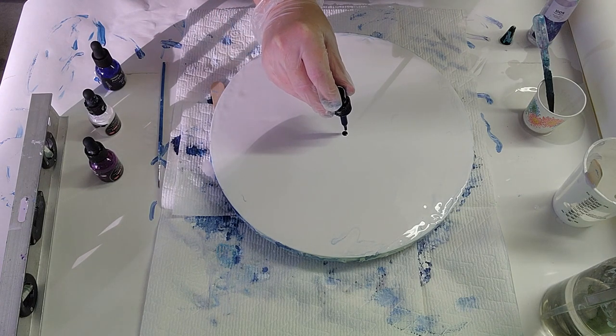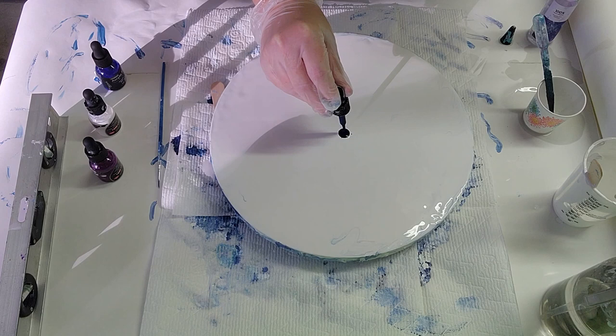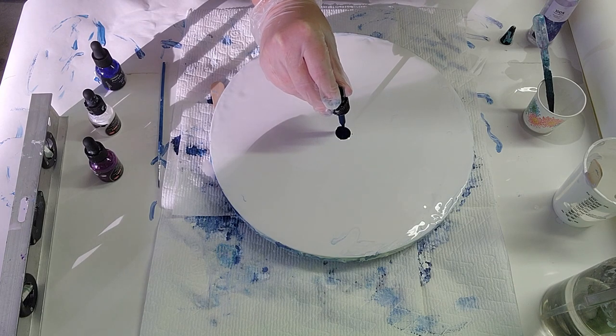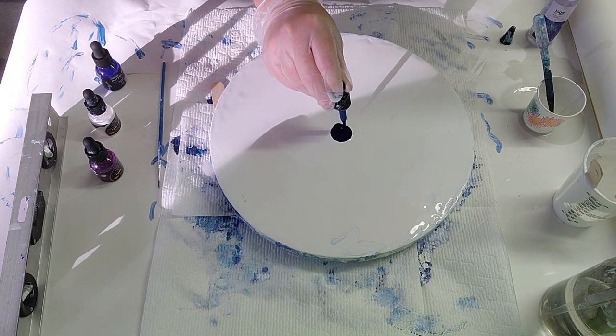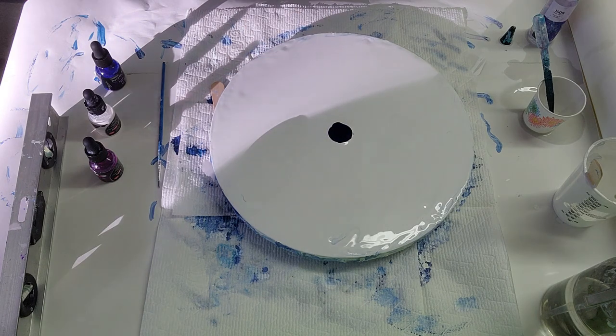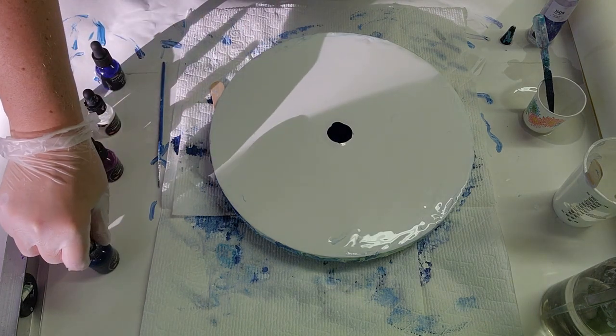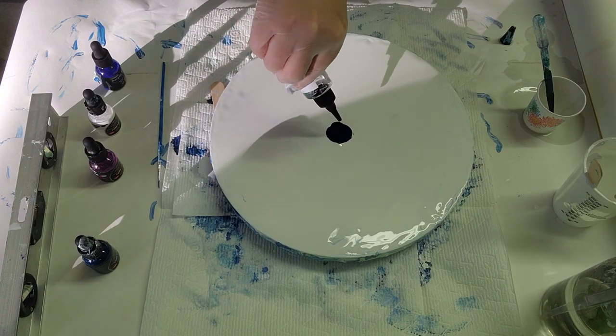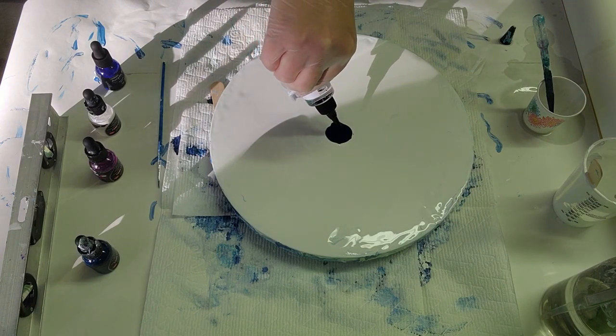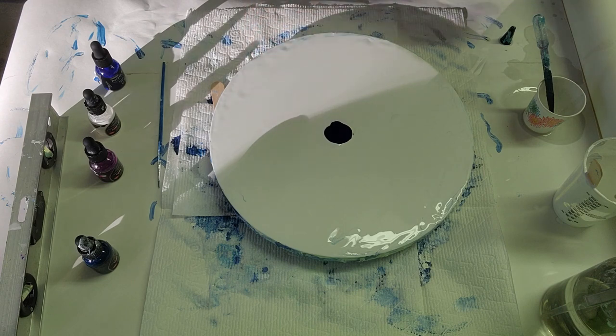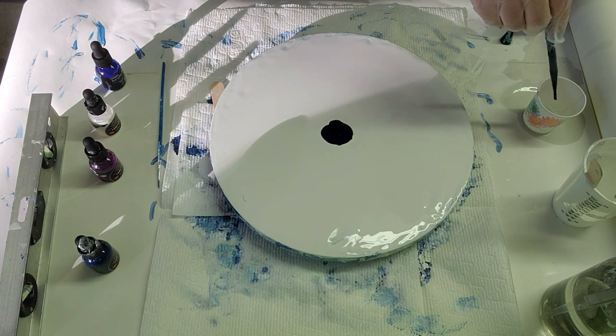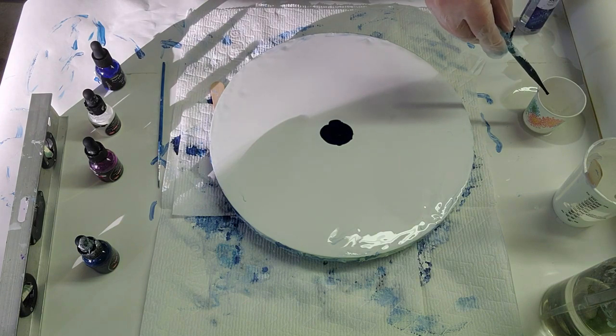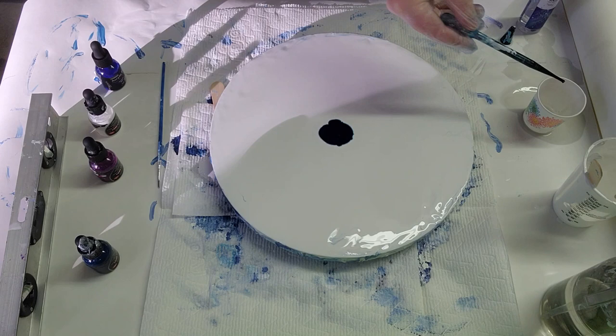I'm going to use the same process as before: an entire dropper full of the teal acrylic ink - which reminds me to say alcohol ink will not work with this, it just won't. Then the one drop of silicone oil, which is a must. If you want a large dendrite pattern, you have to have the silicone oil.